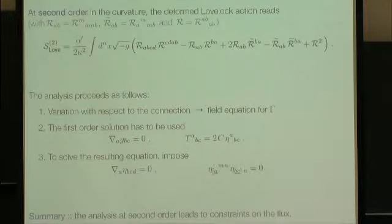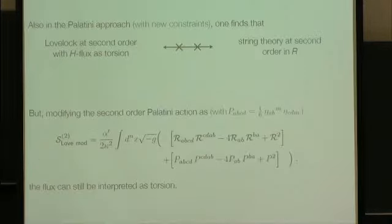If you go through the analysis at second order, the action looks like this. We compute the field equations for the connection. To solve that equation, we need to use the first order solution which we found earlier. To find a proper solution, we also have to impose these restrictions on the fluxes. The upshot is that at the second order analysis, we find some constraints on these fluxes eta. Can we make that compatible with string theory? The answer is no, unfortunately. Even if you look at the Lovelock Palatini action in second order with H-flux as torsion, it's not compatible with the string theory action in second order in R. However, as a side remark, if we modify our Lovelock action this way by including these terms, it can actually be made compatible.